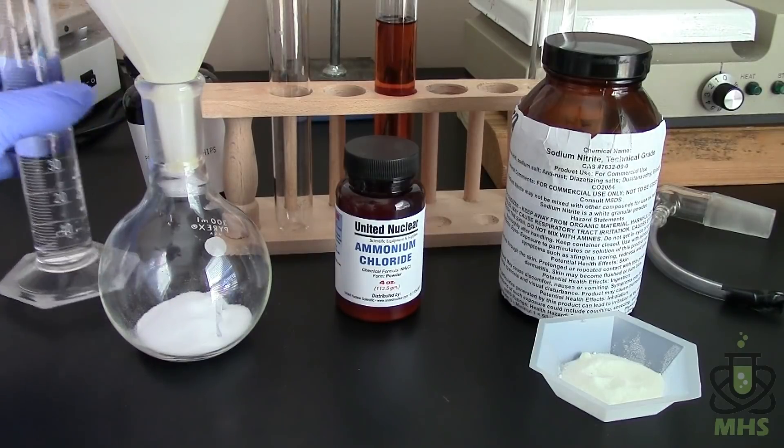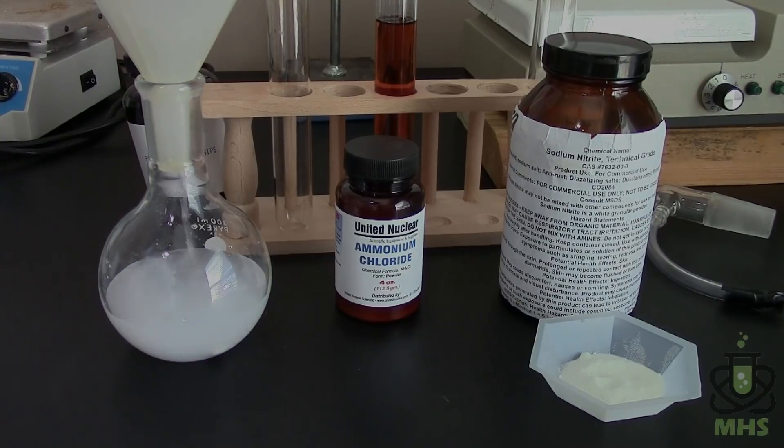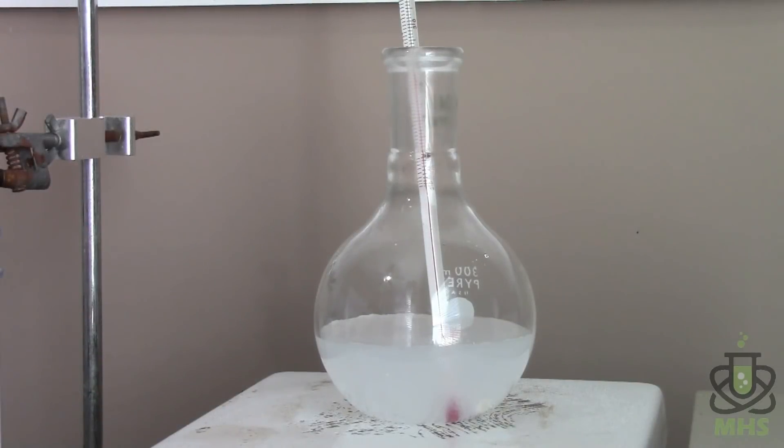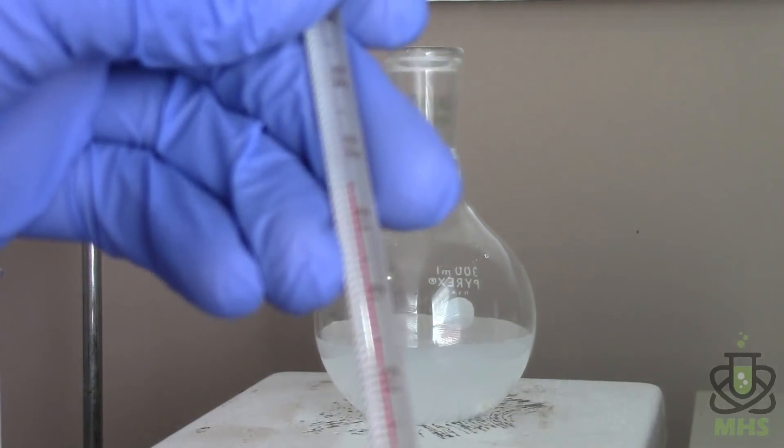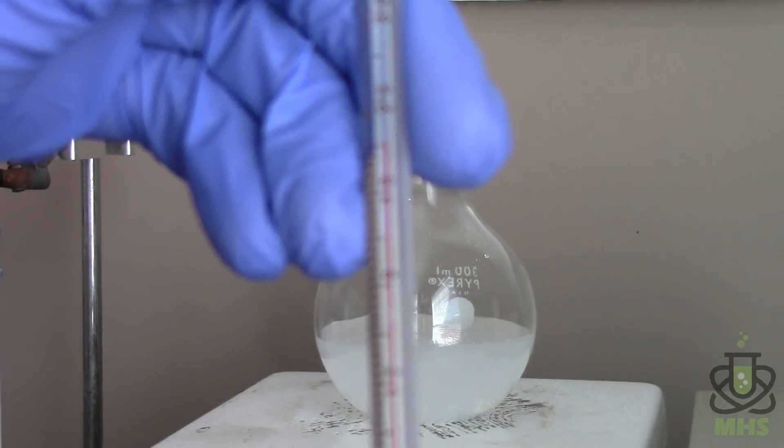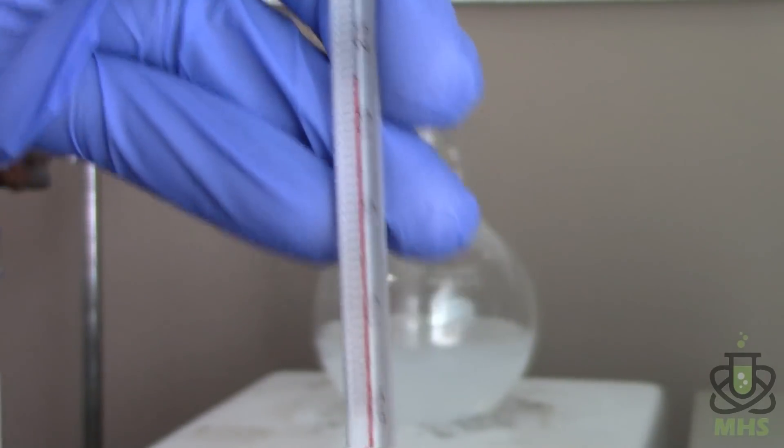So first of all let's go ahead and dissolve the ammonium chloride into the 100 milliliters of water. So just dissolving the ammonium chloride is actually endothermic. So the room is about 25 celsius and the solution is about 15 degrees. So pretty cold.